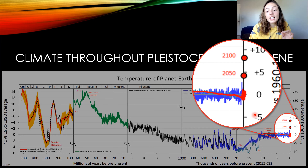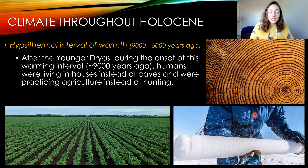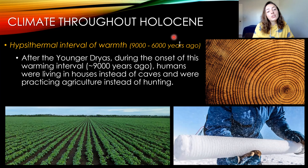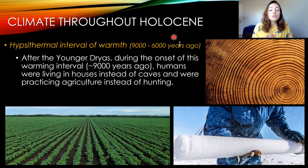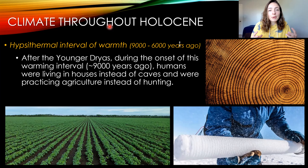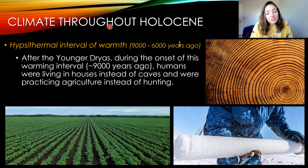Moving to Holocene climate fluctuations: there's what's called the hypsothermal interval of warmth, which occurred around 9,000 to 6,000 years ago, right after the Younger Dryas. During the onset of this warm period, we have evidence that humans began living in houses rather than just caves, and also started practicing agriculture, which was likely because they couldn't farm until there was agriculturally favorable land available after the glaciers retreated.